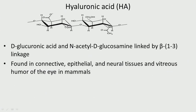Hyaluronic acid is produced by bacteria and is found in connective tissues, epithelial tissue, the humor of the eyes in mammals, and neural tissues. It is a very important polymer. It consists of D-glucuronic acid and N-acetyl glucosamine. We have the amine and the acetyl CH3CO group here, and they are linked by a beta linkage — unlike alpha which is down, beta is up.